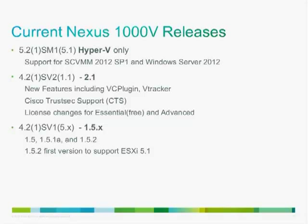The Hyper-V code works with Hyper-V for Windows Server 2012 and requires SCVMM 2012 Service Pack 1. On the ESX side, there are two versions: the 1.5.2 or 1.5.x code train and the 2.1 code train, with 2.1 being the most recent. Version 2.1 includes the VC plug-in, VTracker, Cisco TrustSec support, and significant licensing changes. The 1.5.x code train is on sustaining code, with versions 1.5, 1.5.1a, and 1.5.2, while improvements are focused on the 2.x code.